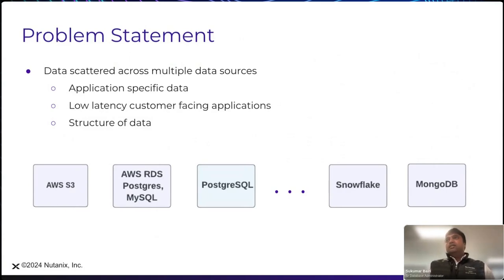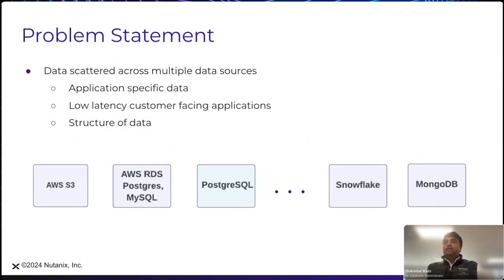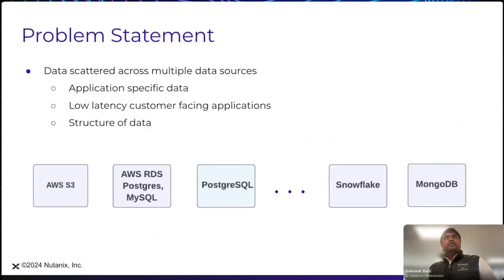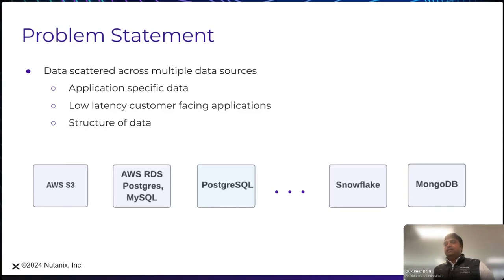We have data scattered across multiple data sources. As we started as a company, there are multiple teams which have their own databases running in silos. We don't have connectivity between those databases — we might have something on MongoDB and another in MySQL or PostgreSQL. It's difficult for us to join data between those two data sources. As a growing company, we have to build dashboards which are low latency, and these are customer-facing applications. The data structure changes with every new patch released for the software, so we have to redefine all the table structures and all upstream and downstream applications depending on that data source.